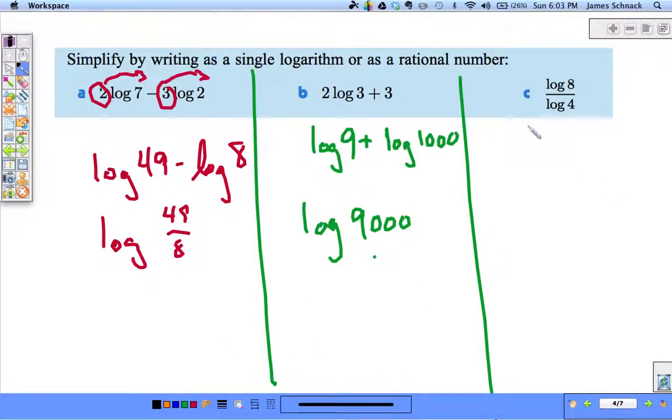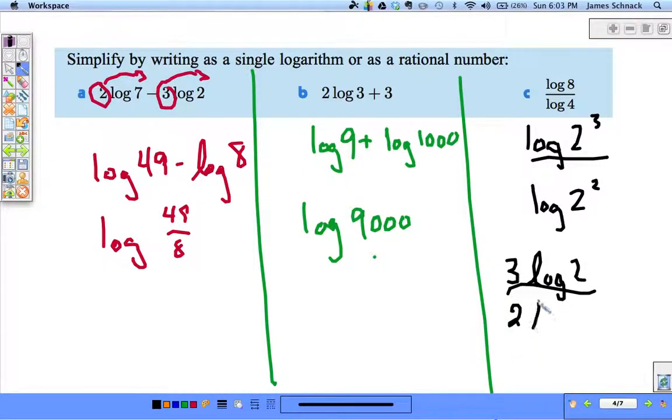Log of 8. Isn't that just log of 2 cubed? And log of 4. That's 2 squared. And then exponents with these logarithms can jump down in front as coefficients. And now, because we have log base 2 over log base 2, divided by itself, we get 1, and this ends up being 3 halves.